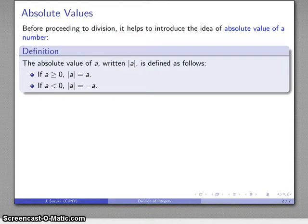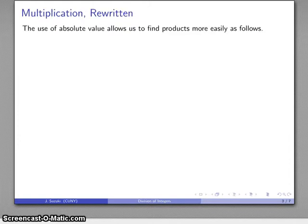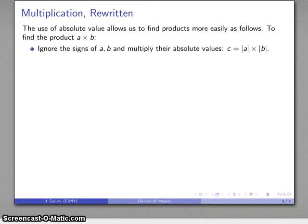If I introduce absolute values this way, I can find products much more easily in the following way. If I want to find the product a times b, first I'm going to ignore the signs of a and b completely and just multiply the absolute values. So I'm going to start off with c as being the product of the two absolute values.